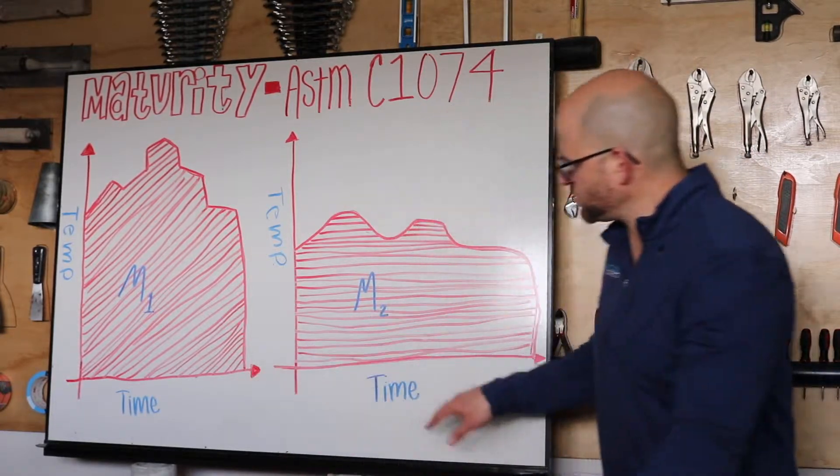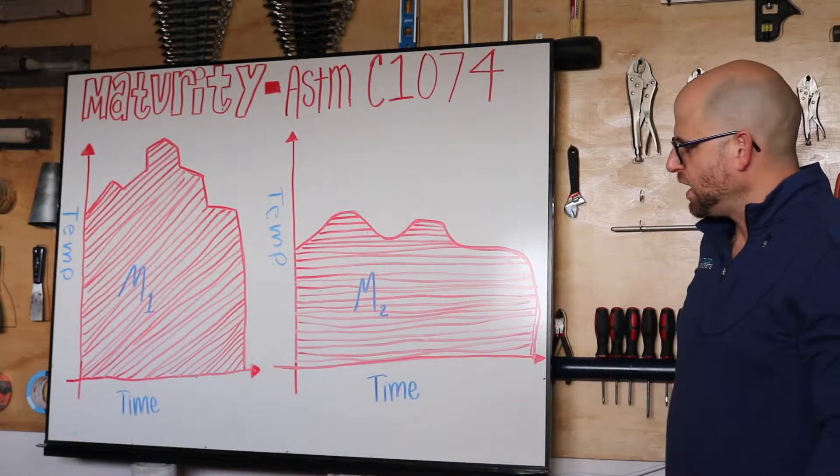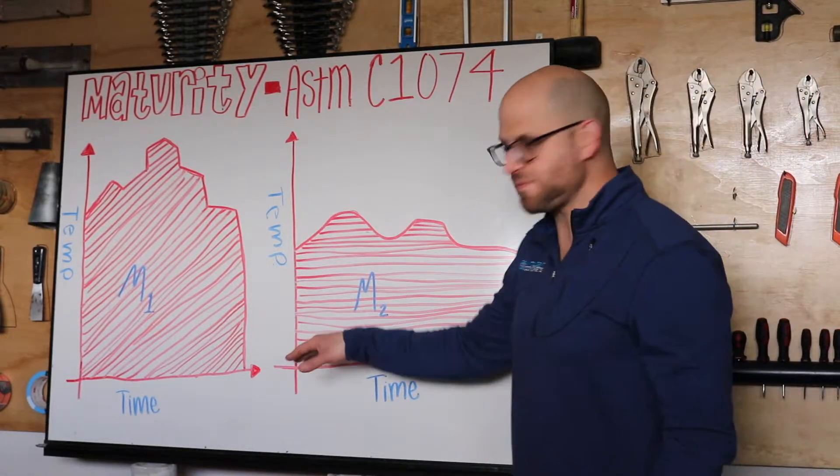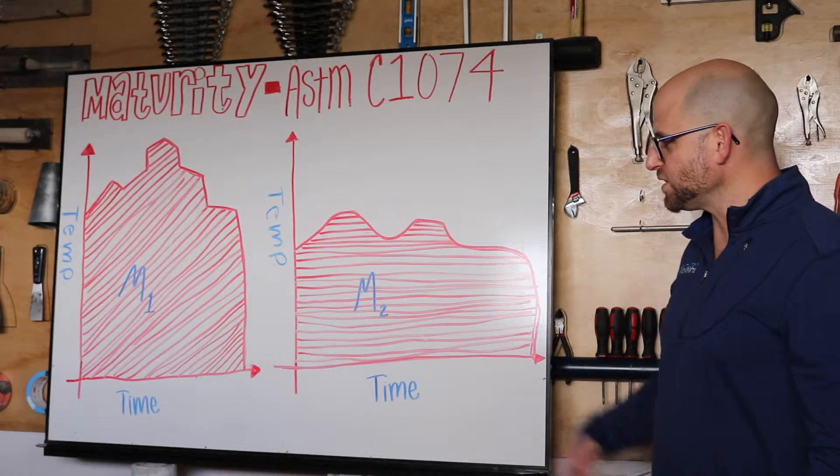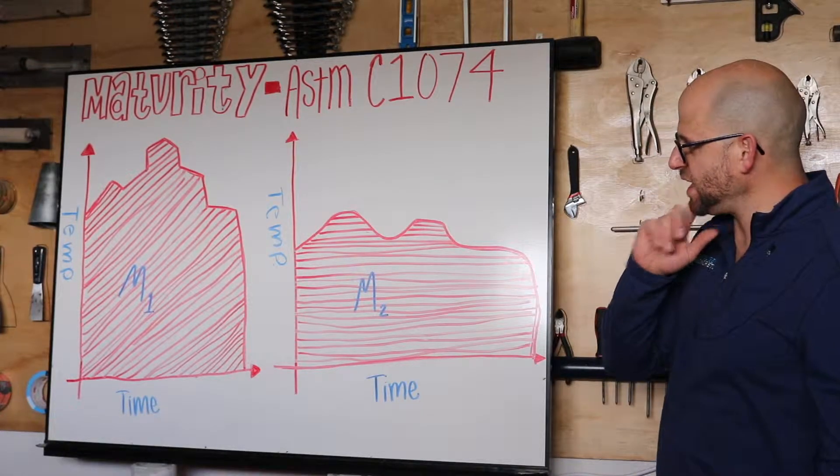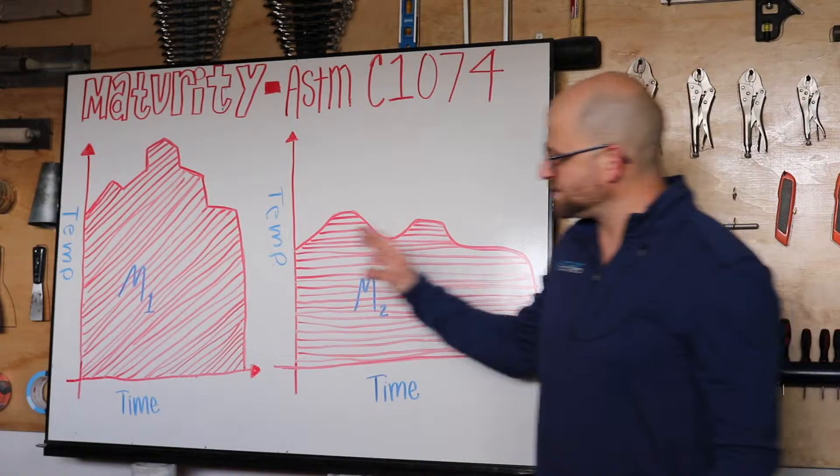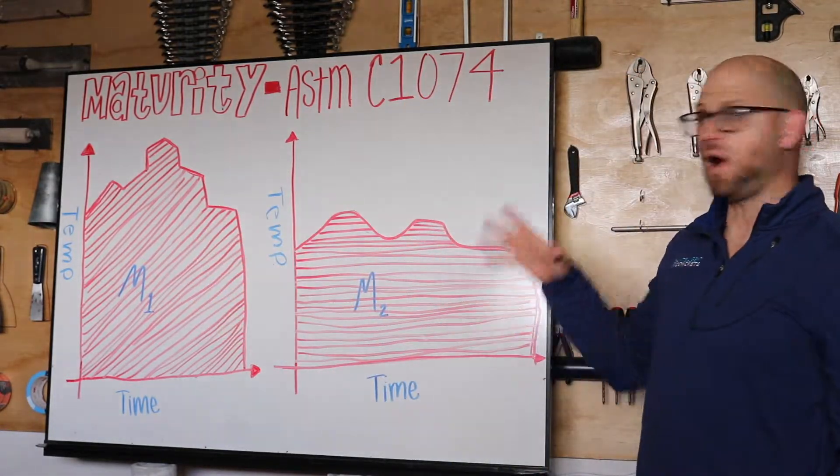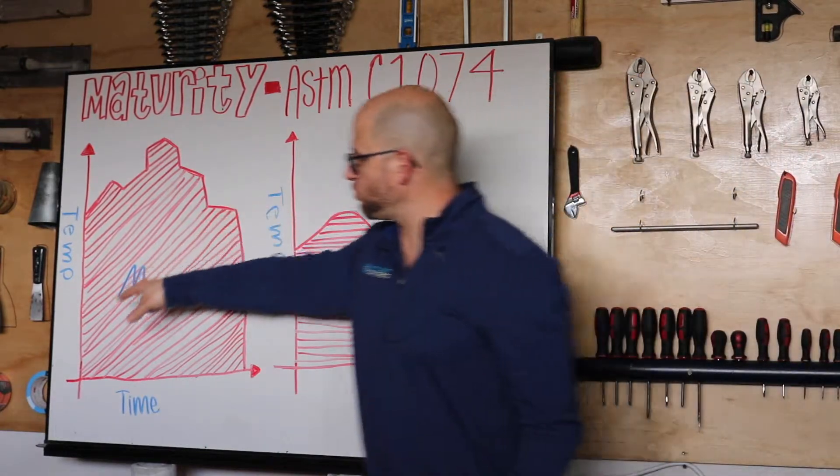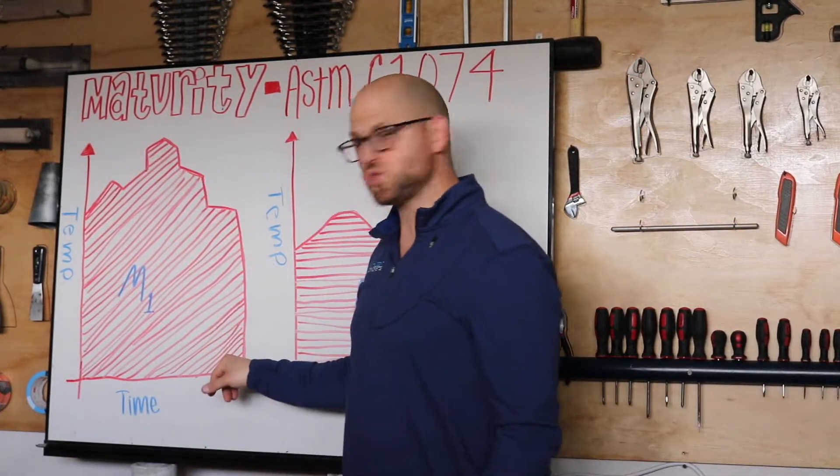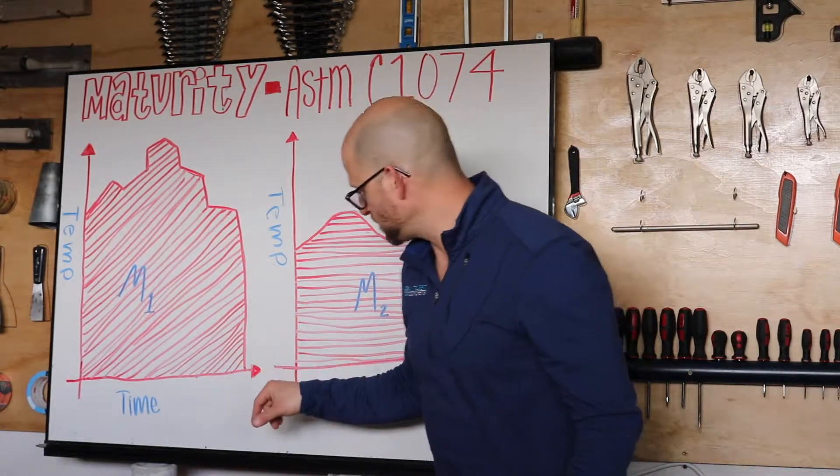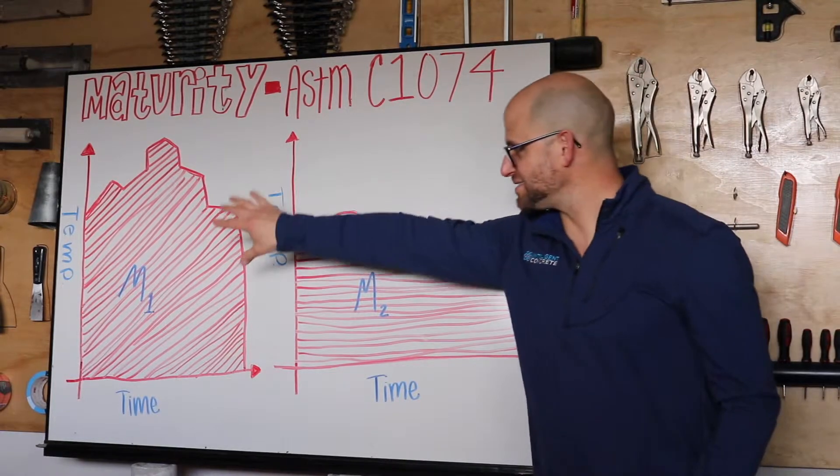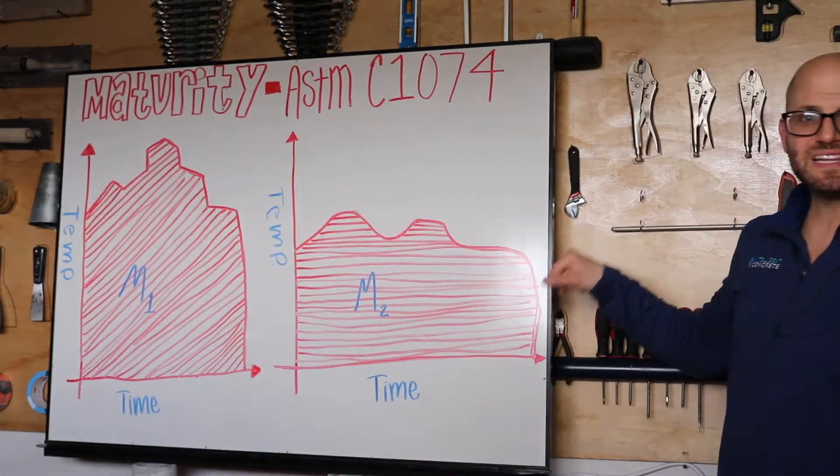We have two temperature versus time curves here, a graph that Patchouli did, both of them on the same axis. You see that they both seem to have a very similar area within the curve, albeit this one rises to a greater temperature over a shorter period of time, and this one not as high of a temperature. To get that same area we need a little bit more in time, and that's maturity.